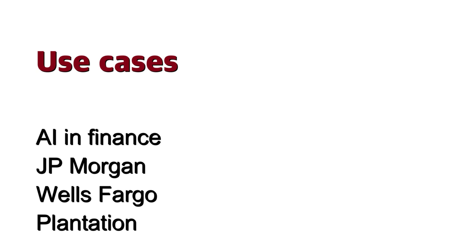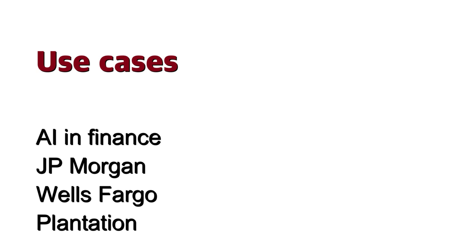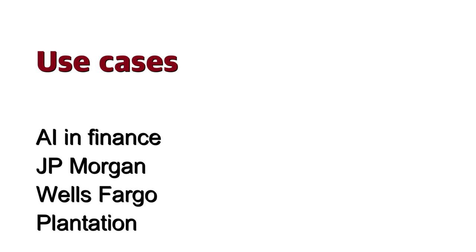The next topic is Use Cases of AI. In finance, Mint or TurboTax are examples of distributive financial institutions — these applications collect personal data and provide financial advice. JP Morgan launched the Contract Intelligence platform, known as COIN, which leveraged Natural Language Processing. This solution processes legal documents and extracts essential data. Manually reviewing 12,000 annual commercial credit agreements would typically take around 36,000 man-hours; however, the machine can do the same work in just a few hours.